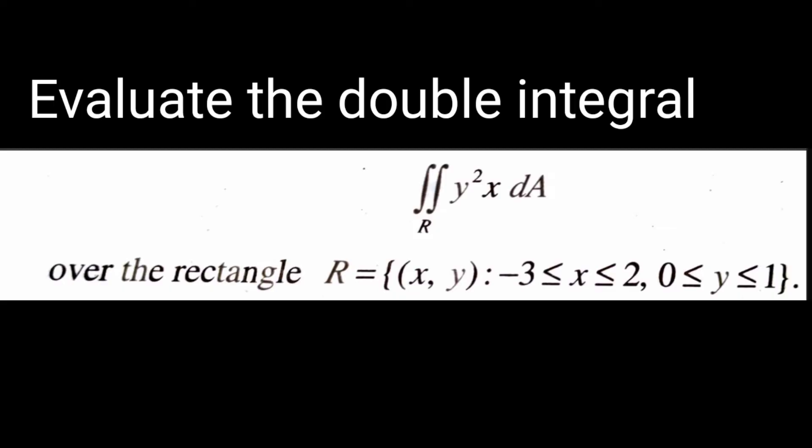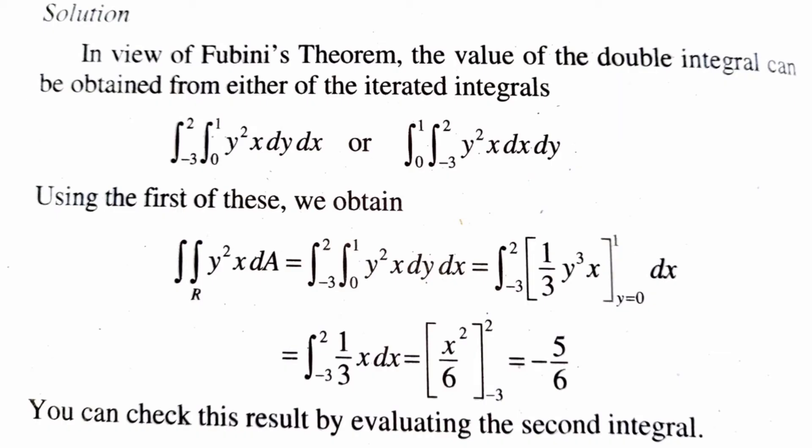Our first question: evaluate the double integral over R of y²x dA, where the rectangle R is defined by -3 ≤ x ≤ 2, 0 ≤ y ≤ 1. In view of Fubini's theorem, the double integral can be obtained from either iterated integral: integral -3 to 2, integral 0 to 1 of y²x dy dx, or integral 0 to 1, integral -3 to 2 of y²x dx dy. Using the first of these, we write the double integral as integral -3 to 2, integral 0 to 1 of y²x dy dx.